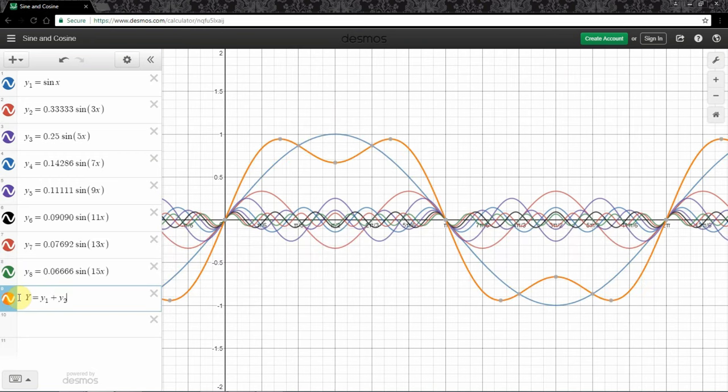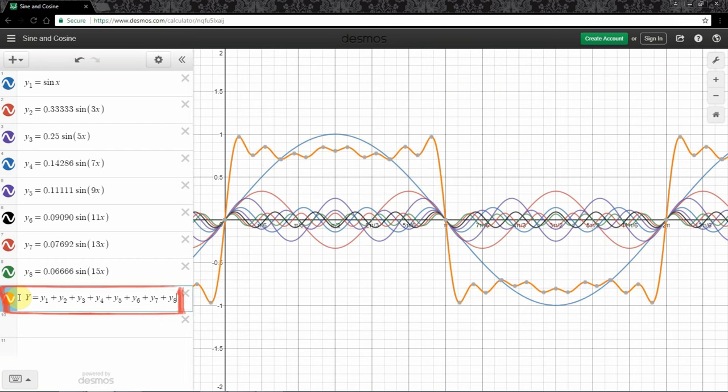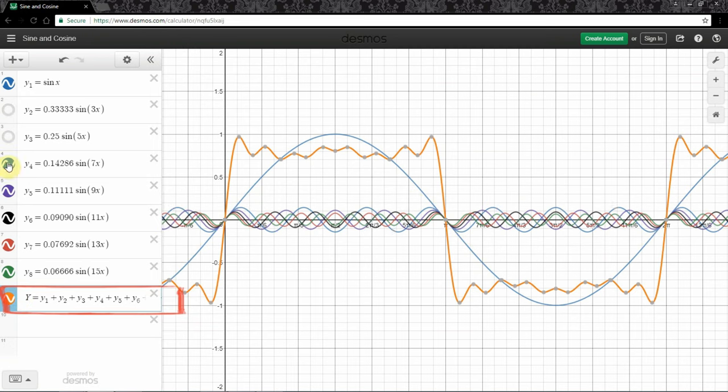For example an ideal square wave, regardless of its period is composed of infinite number of frequencies and therefore it ideally needs an infinite processing bandwidth.